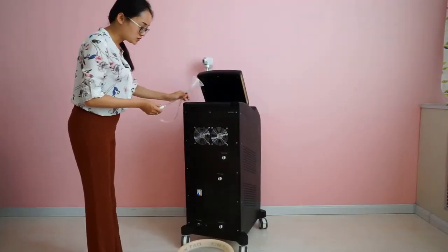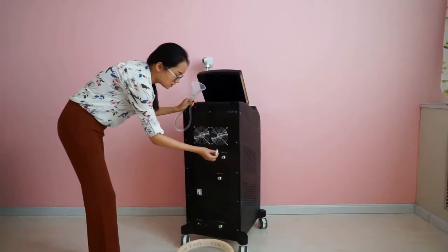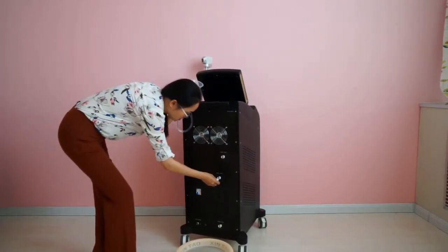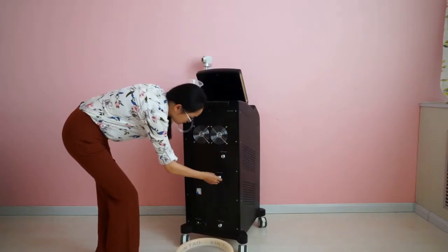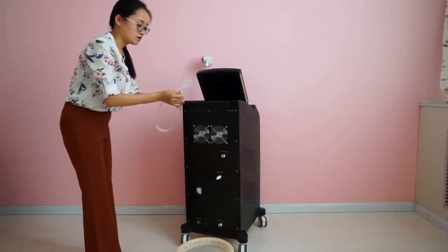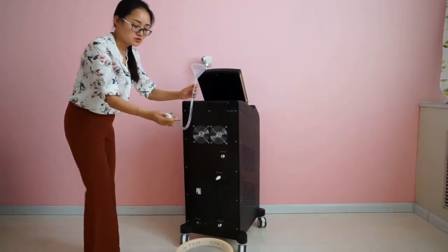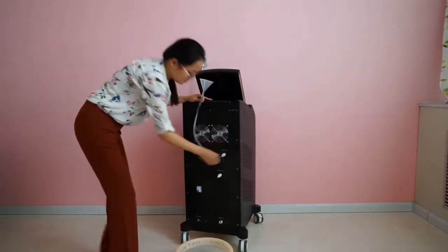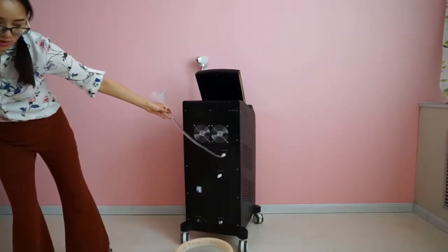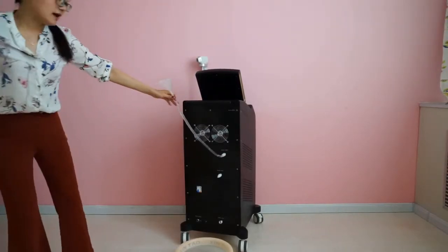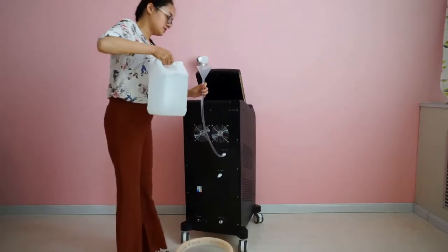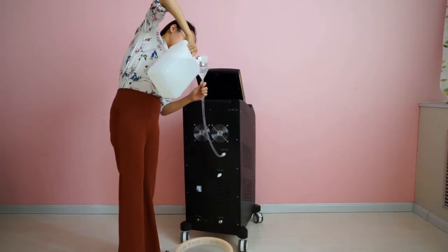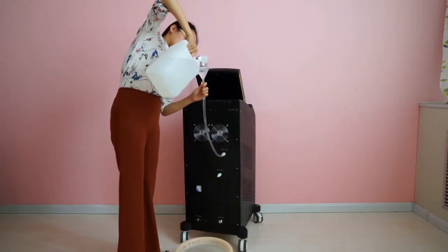Now, let's start to add water to this machine. Use this water bar to connect the water spill. You see this funnel and tubes connected on the water inlet. You should use the DI water for about 2 liters. Like this, you should connect the water.